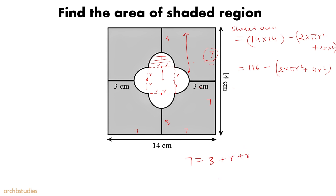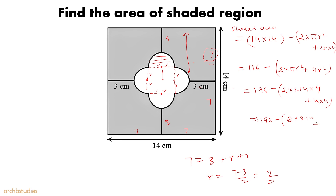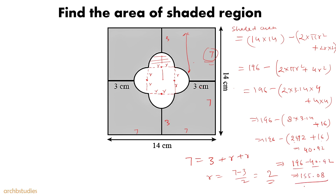Substituting r = 2: area = 196 minus 2 into 3.14 into 4 plus 4 into 4 = 196 minus (8 into 3.14 plus 16) = 196 minus (25.12 + 16) = 196 minus 41.12 = 154.88 unit square. That is the area of the shaded portion.